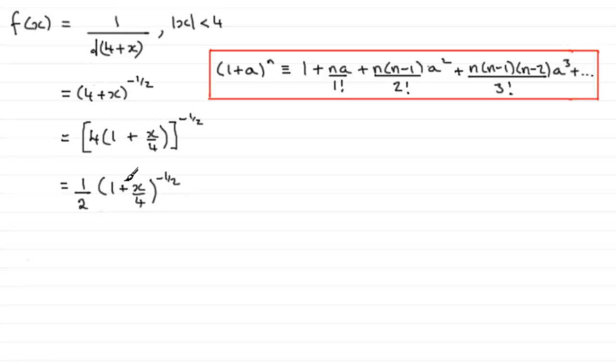You can see that this is exactly the right form that we want. n is the power minus a half, and a here is the x/4. So we can just use this to expand (1 + x/4) to the power minus a half.